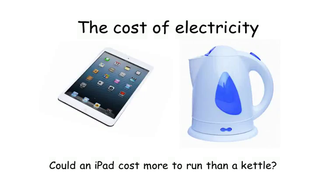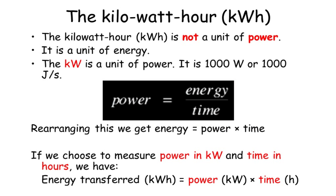Today we're going to cover the cost of electricity and look at the kilowatt hour — how you work out the cost of electricity and how you calculate how many kilowatt hours you've used. The kilowatt hour (kWh) is not a unit of power, it's a unit of energy. Power is energy over time, and if we rearrange this, energy equals power times time. If power is in kilowatts and time is in hours, the energy transferred is in kilowatt hours.